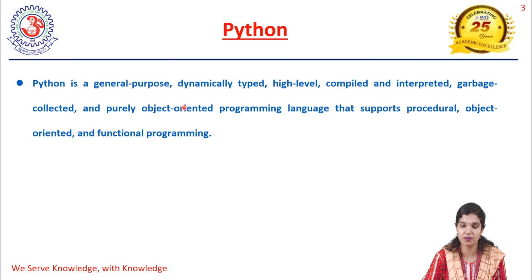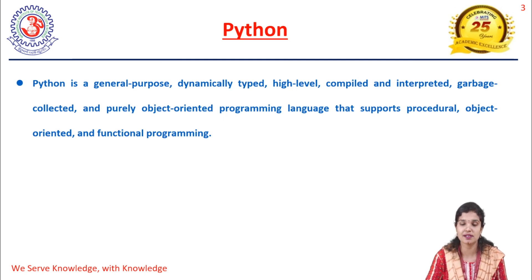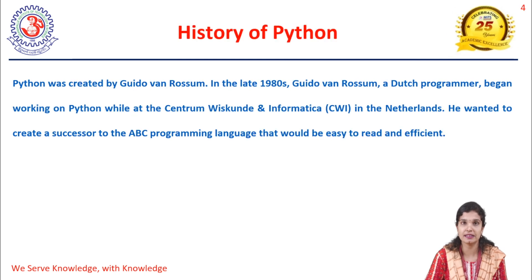So Python has all these features: general purpose language, dynamically typed language, high-level programming language, compiled and interpreted programming language, garbage collector which removes all unused objects, and it is a highly object-oriented programming language.